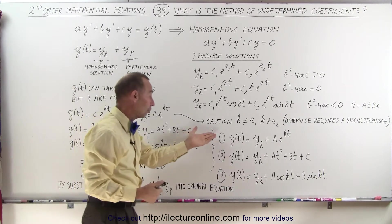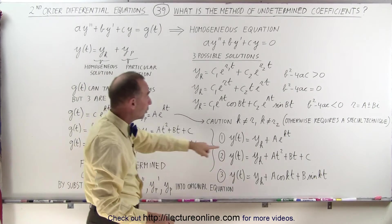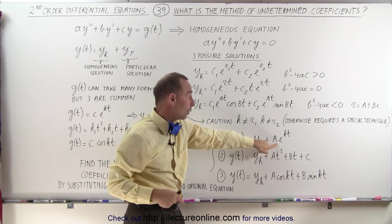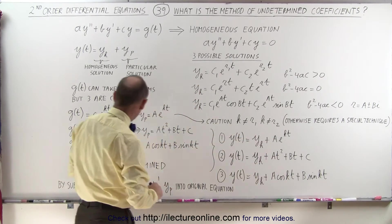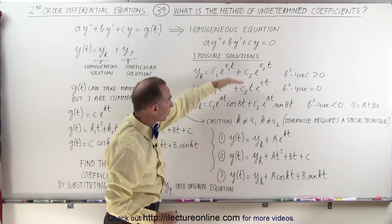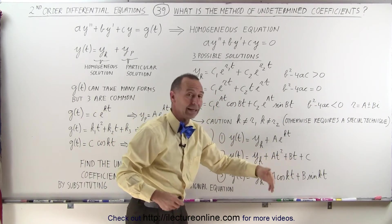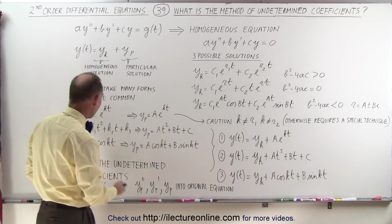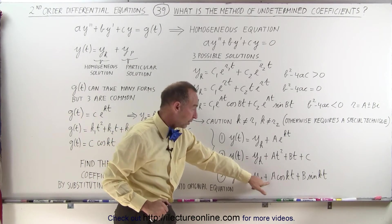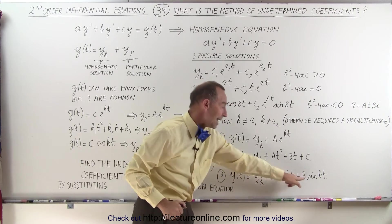In the end, you'll end up with solutions like this. If we have an exponential type function, it'll be the homogeneous part plus the exponential particular solution, where we have established what A is. If we have a polynomial type function, the solution will be the homogeneous part plus at squared plus bt plus c. And if it's a trigonometric function, the final solution will be the homogeneous part plus the particular solution of the form a cosine plus b sine, and we have to determine a and b.